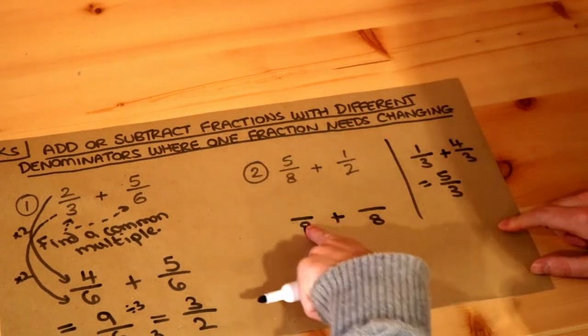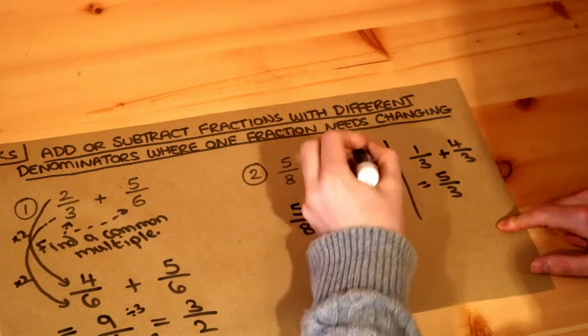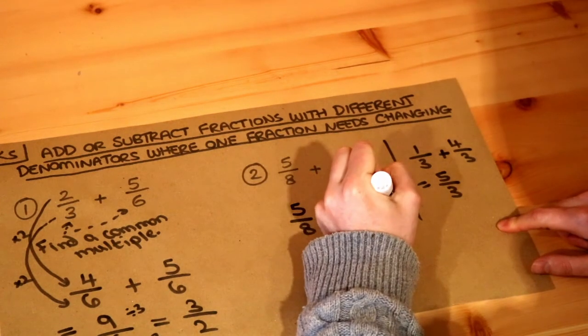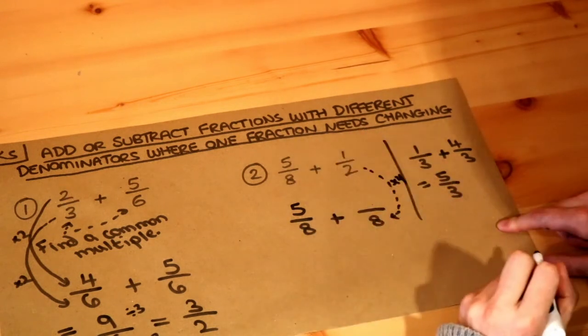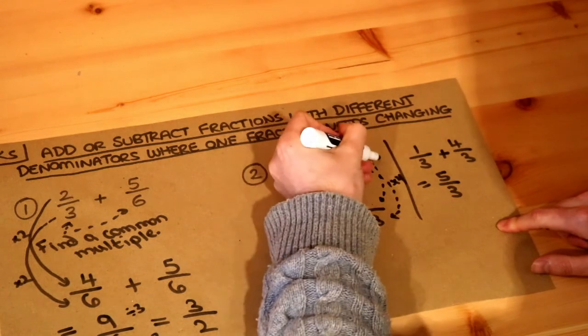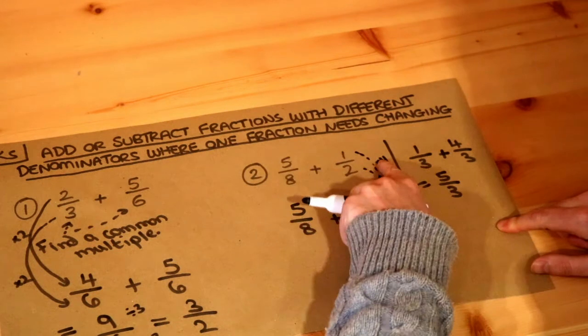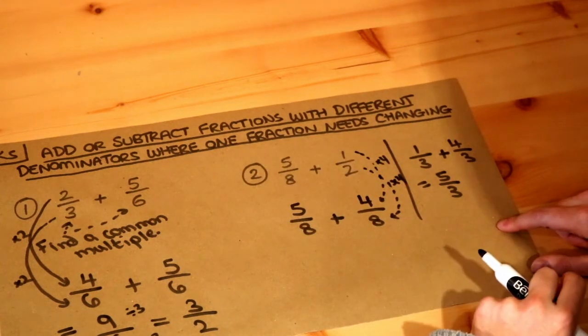Now this fraction has stayed the same because eight has stayed as eight so we can just copy the five there. But this fraction has changed. Look you can see the two has become eight. What have we multiplied it by? Well it's four times bigger. So if the denominator is four times bigger, the numerator also has to be four times bigger and one times four is going to be four. So half is the same as four eighths.